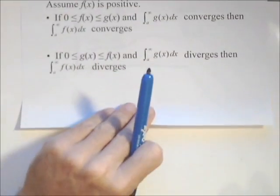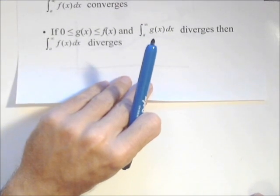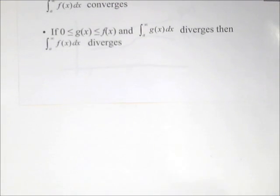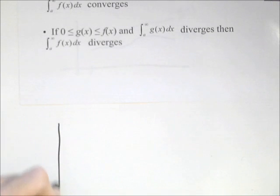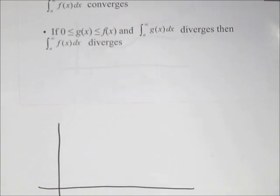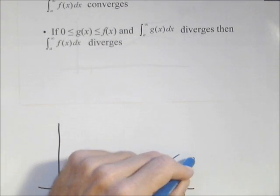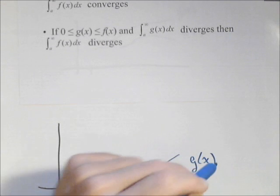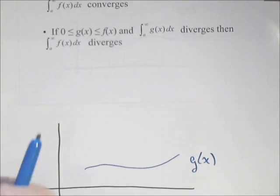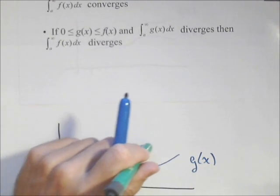Now, for divergence, it's a fairly similar idea, and we'll use a very similar drawing. Now in this case, g(x) is the one we're using to test. So there's g(x). And f(x), and f(x) is now our larger function.